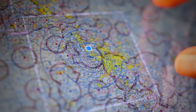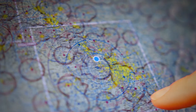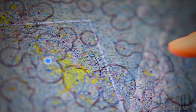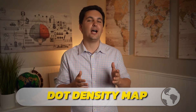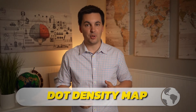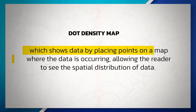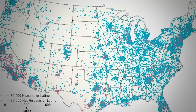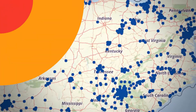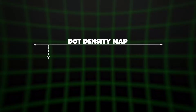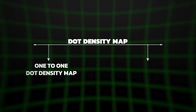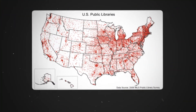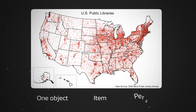This distortion can be due to the scale of the map or simply due to the shading. The next thematic map is a dot density map, which shows data by placing points on a map where the data is occurring, allowing the reader to see the spatial distribution of the data. Generally, there are two types: a one-to-one dot density map, where each dot represents one object, item, or person.